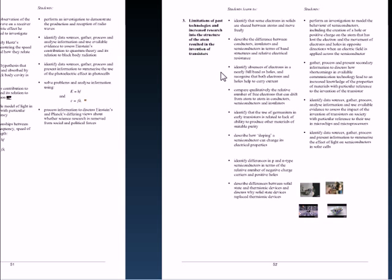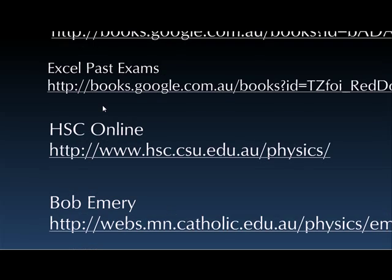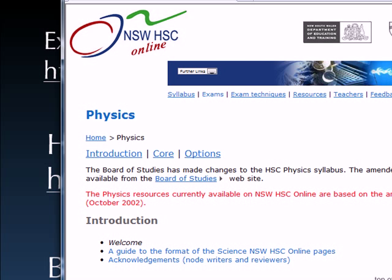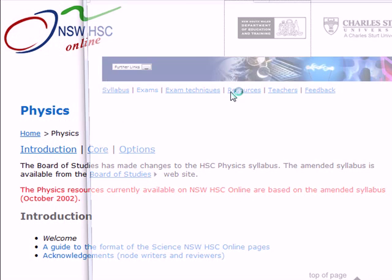We're going over here to the third module, showing that there are three sections to it. The bold, darker outline — the first column — is things you have to know, and the third column is things you have to do. Looking at the references here, there's a list of references seen on the Prezi. HSC Online is a very good general reference to make sure that you click through all the dot points.